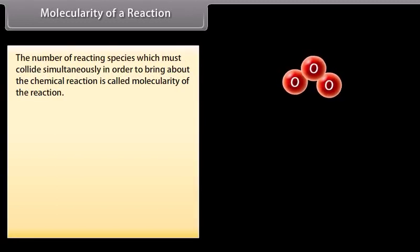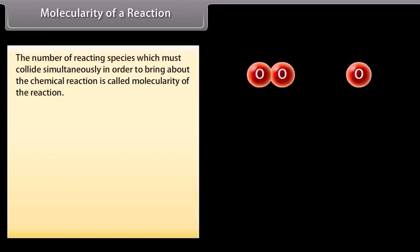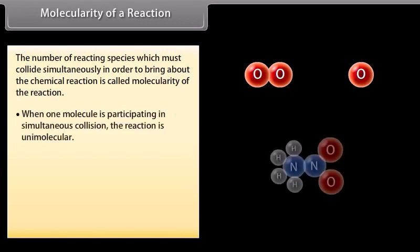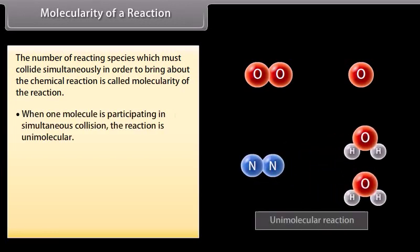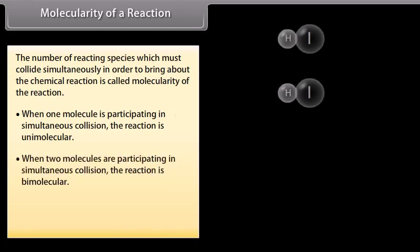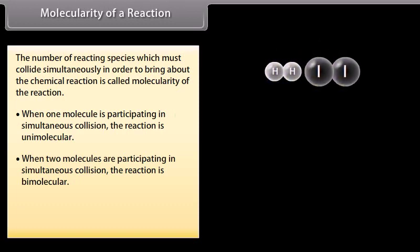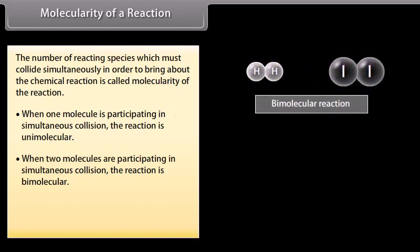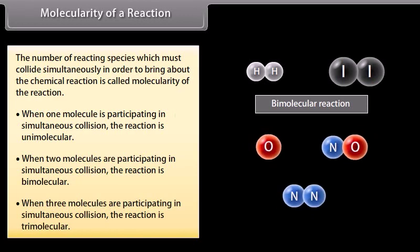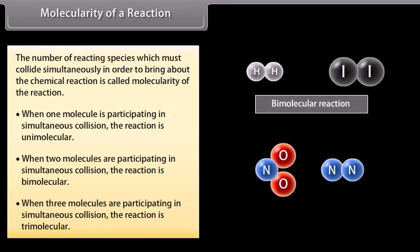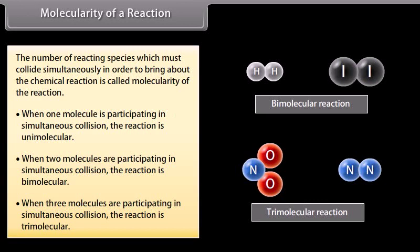The number of reacting species which must collide simultaneously in order to bring about the chemical reaction is called the molecularity of the reaction. When one molecule is participating in simultaneous collision, the reaction is unimolecular. When two molecules are participating, the reaction is bimolecular. When three molecules are participating, the reaction is trimolecular. Molecularity of a reaction is always a whole number.